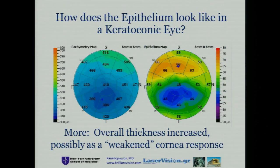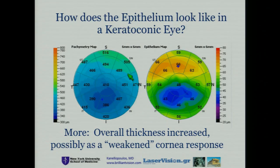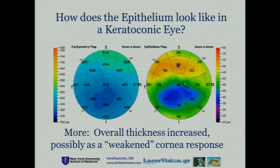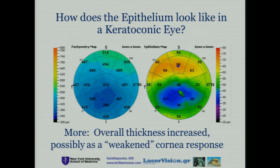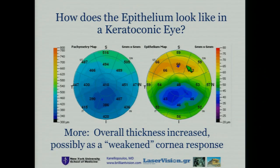Here is how the epithelium looks in a patient with keratoconus. Here is the topography of the cornea, and here we can see the epithelial mapping. You can see that the epithelium is thinner in the areas that the cornea is steeper, and thicker in the areas that the cornea is more flat.